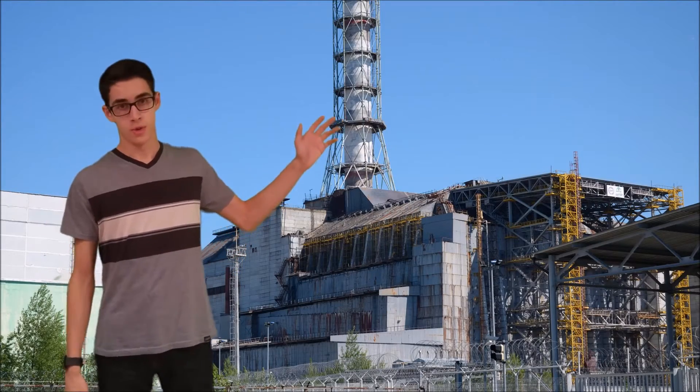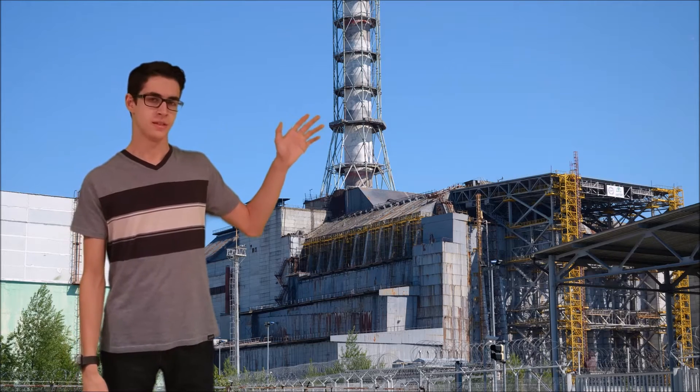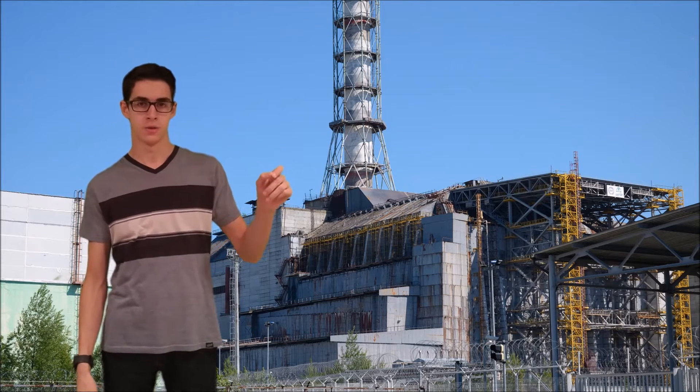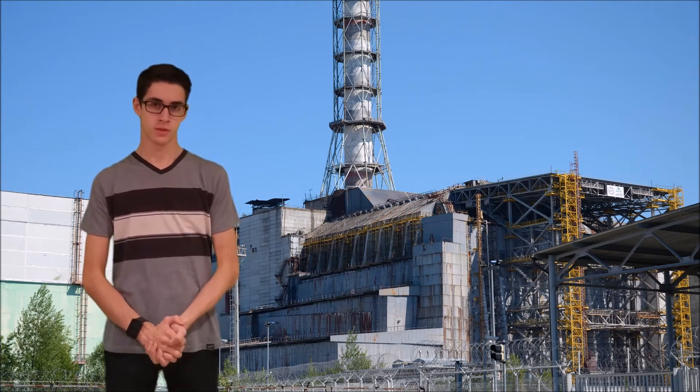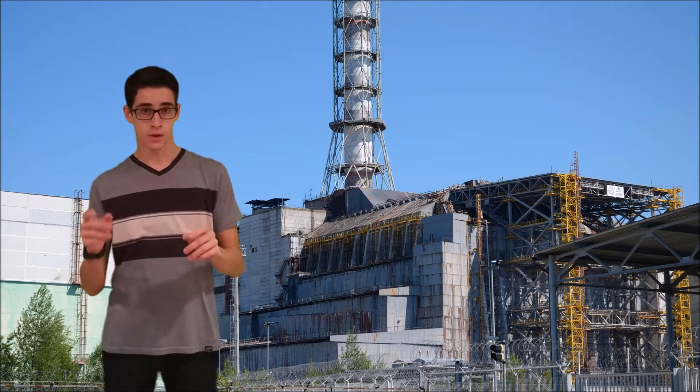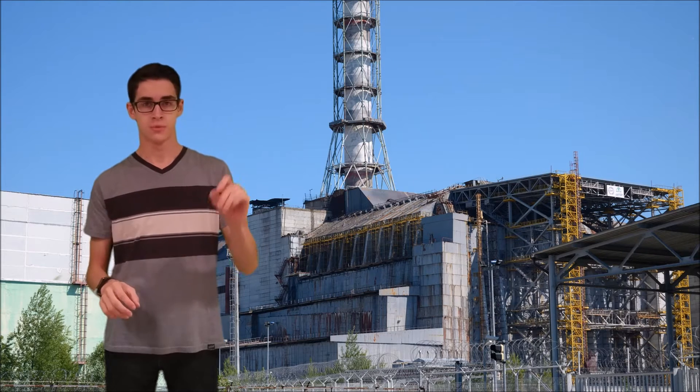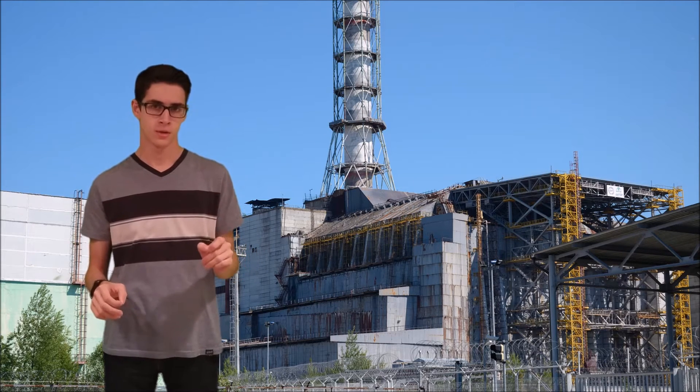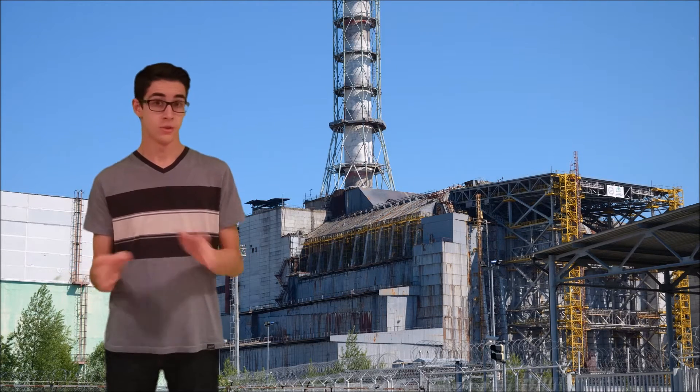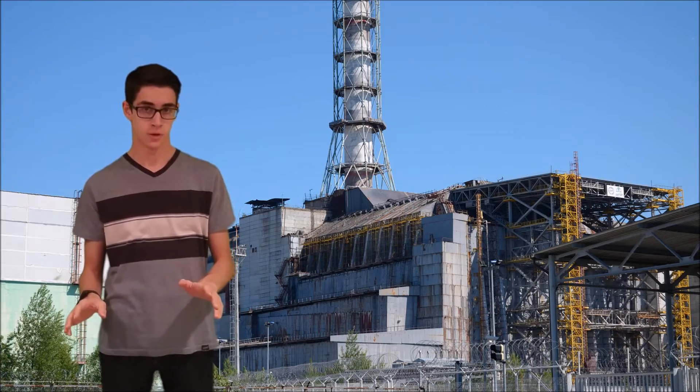Chernobyl's reactor number four, the one that famously exploded in 1986, was an RBMK reactor, a type exclusively used by the Soviet Union. The flaw that caused it to explode isn't shared by any other reactor, and the flaw was fixed in all other RBMK reactors shortly after the incident. There's no way history can repeat itself here.